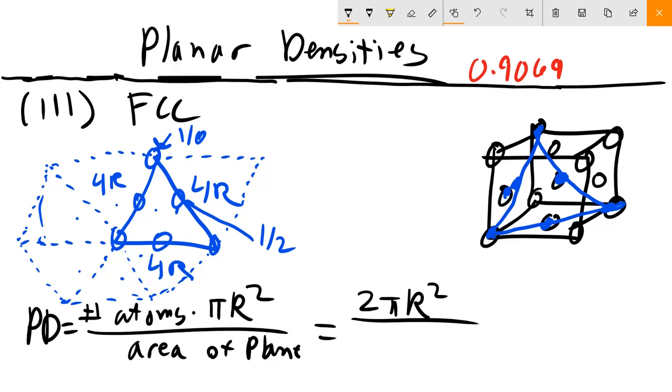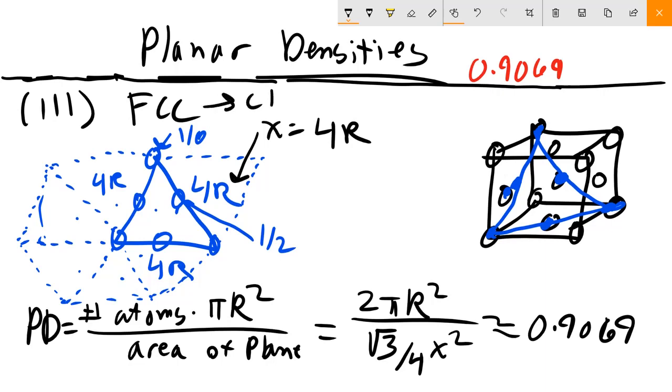And, if you remember back to geometry, which I definitely had to look this back up, the area for an equilateral triangle is just going to be root three over four times this side, which we'll call x, x squared. And once you plug in, so x is equal to 4R. Once you plug in, we find that this plane gives us our magic number. So the 111 plane is a close-packed plane in a close-packed structure, which is FCC. And so we found our one close-packed plane.